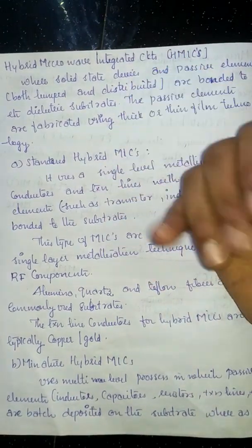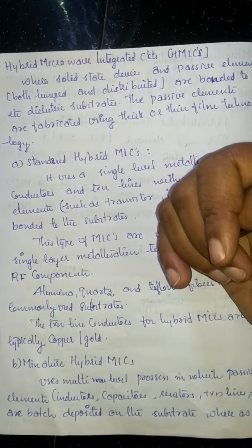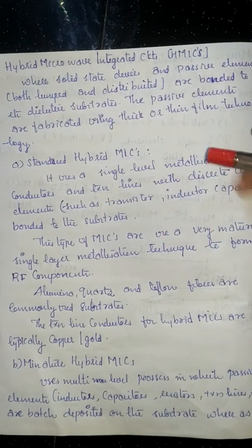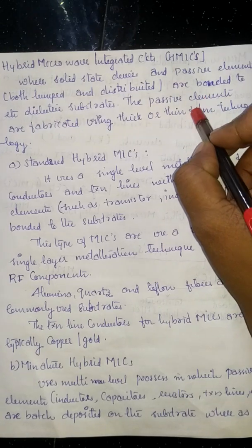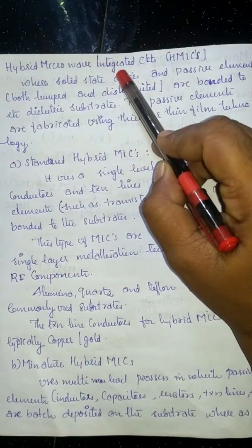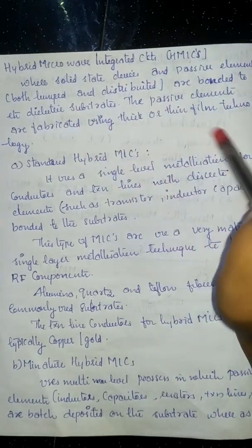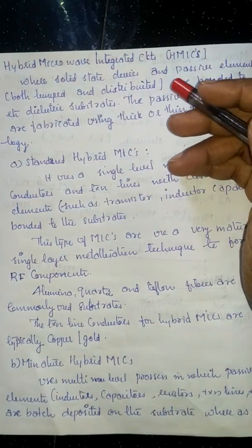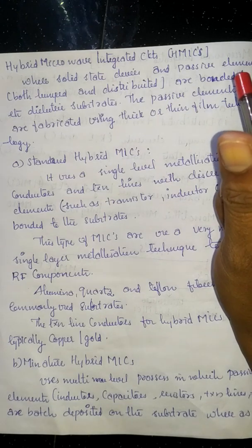The passive elements used in hybrid microwave integrated circuits can be fabricated using thick or thin film technology. Thick or thin film technology is used for passive element fabrication in hybrid MICs.